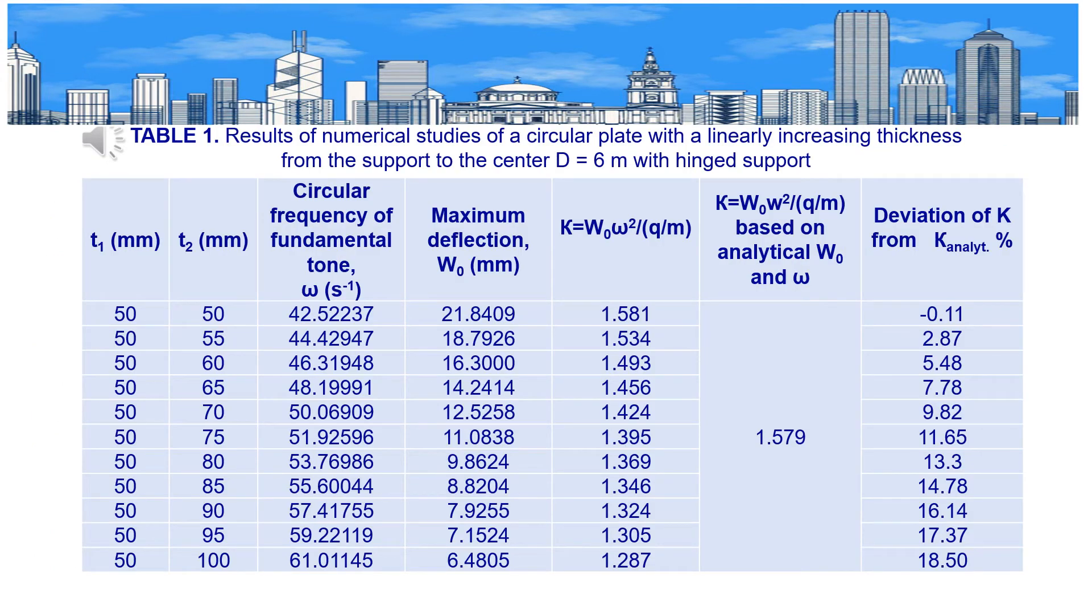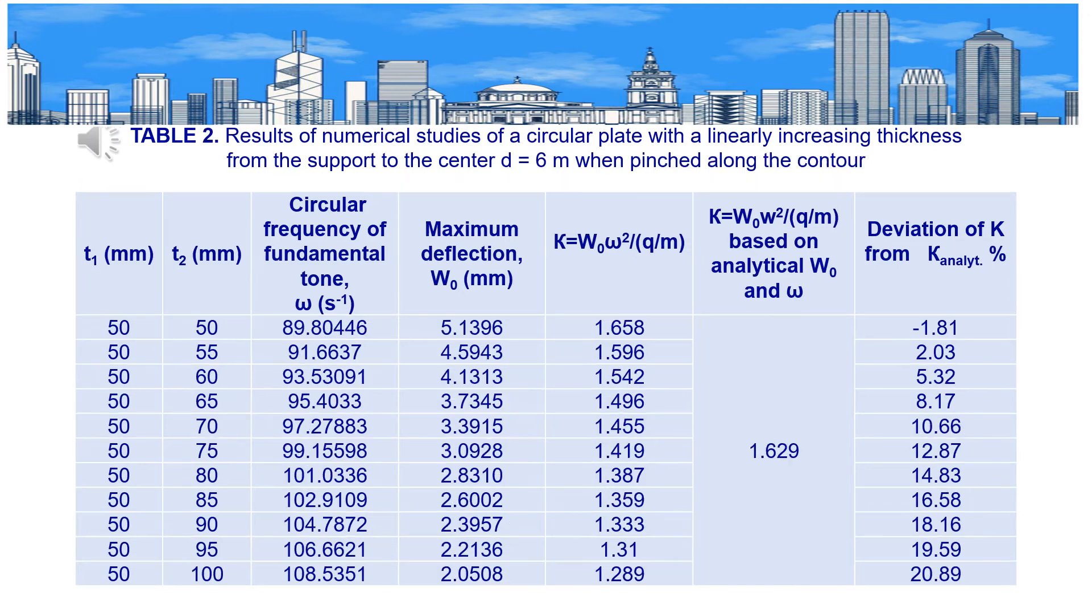Table 1 shows results of numerical studies of a circular plate with linearly increasing thickness from the support to the center, d equals 6 meters, with hinged support. Table 2 shows results of numerical studies of a circular plate with linearly increasing thickness from the support to the center, d equals 6 meters, when pinched along the contour.